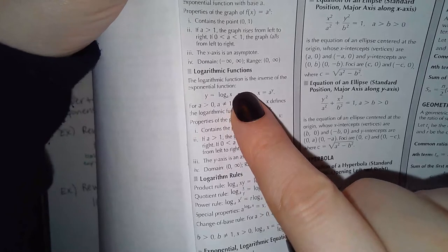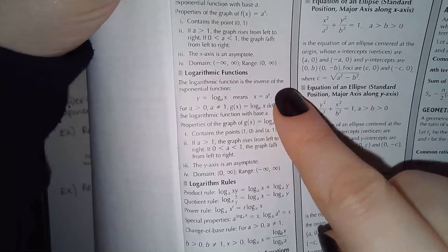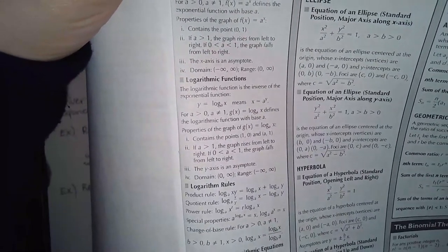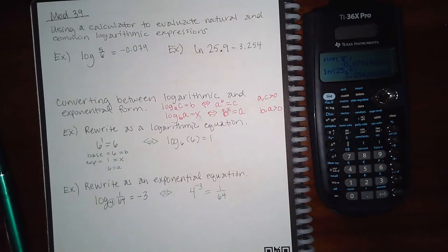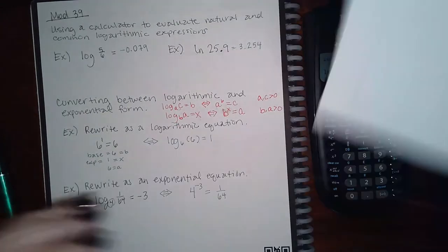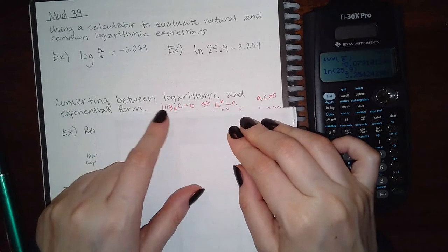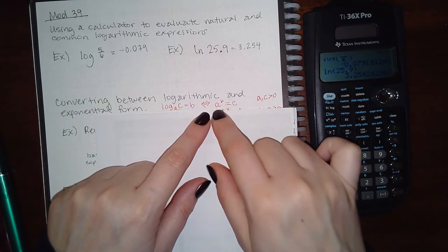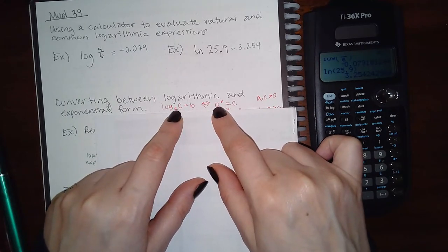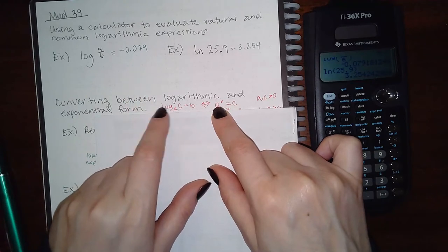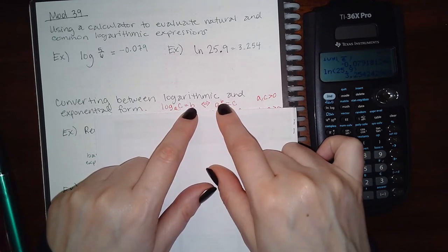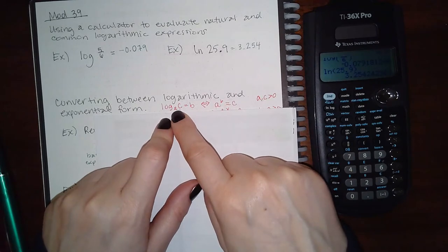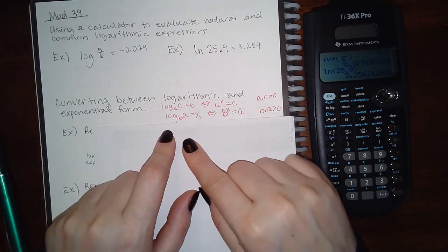The formula states that y equals log base a of x means the same thing as x equals a to the y. The base has to be positive and x has to be positive. In ALEKS they use different letters — log base a, but instead of x they put c and instead of y they put b. In the exponential expression the same base a is used, and since the logarithmic expression equals b, b is the exponent, and the argument becomes c on the other side.